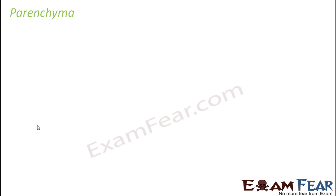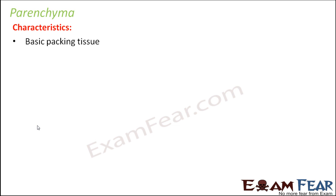The first type of simple permanent tissue is parenchyma. These are the basic packing tissue of the plant body — wherever some gap is left, it is filled by parenchyma. These are unspecialized living cells, not dead cells. They can perform a variety of functions. They come in various shapes — spherical, oval, or round — have thin cell walls made up of cellulose, and intercellular spaces are present between the cells.